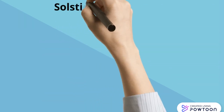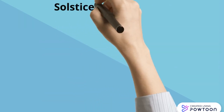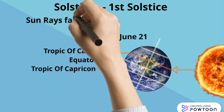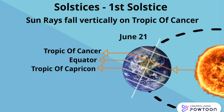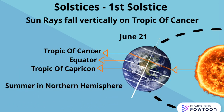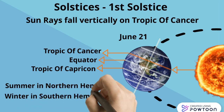Now let's talk in detail about the first solstice. As you can see in this figure, the sun rays fall vertically on the Tropic of Cancer, which means the Tropic of Cancer would be hotter than the equator and the Tropic of Capricorn. And as the Tropic of Cancer is in the Northern Hemisphere, we conclude that the Northern Hemisphere will face summer, while the Tropic of Capricorn, which is in the Southern Hemisphere, will face winter.